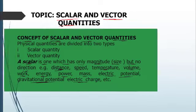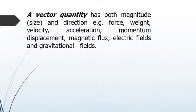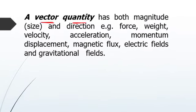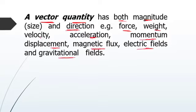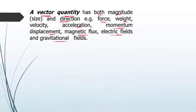These scalar quantities do not have direction, but they have magnitude — they can be quantified and they have size. Vector quantities are simply the opposite of scalar quantities: they have both magnitude and direction. Examples of vector quantities are force, weight, velocity, acceleration, momentum, displacement, magnetic flux, electric fields, and gravitational fields. All force fields specifically are vector quantities.